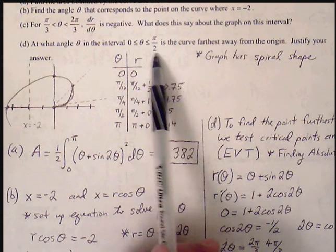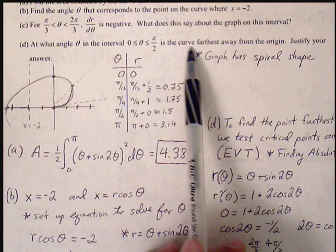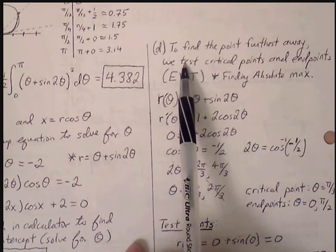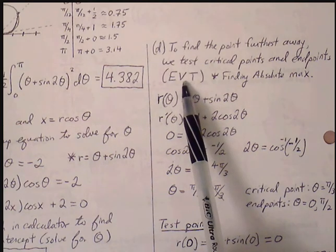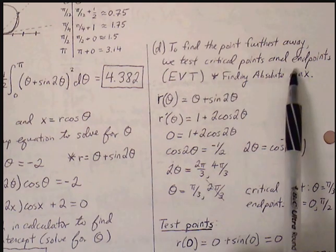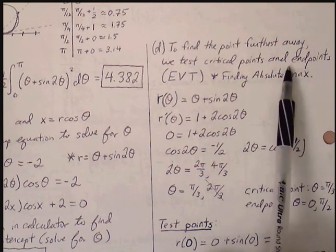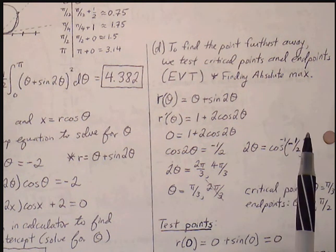Part d: At what angle between 0 and pi over 2 is the curve furthest from the origin? We treat this as a maximum value problem. Using the Extreme Value Theorem, candidates are critical points and endpoints on the closed interval. The endpoints are 0 and pi over 2, and we need to find the critical point where the derivative equals 0.